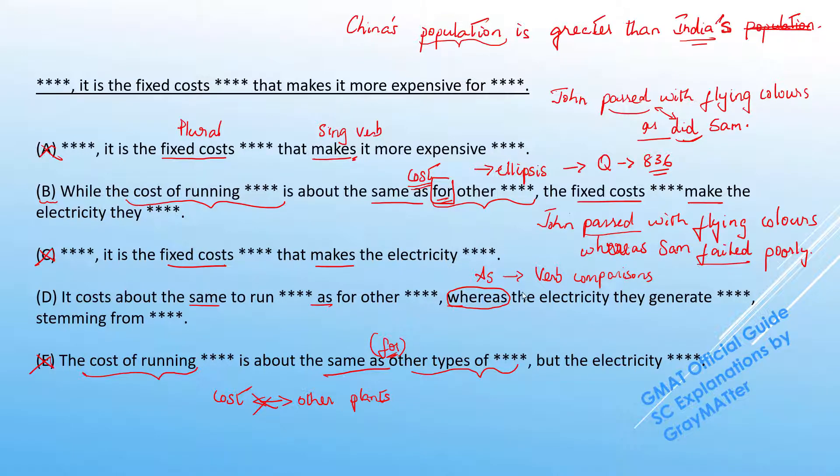But if we notice the two clauses that are actually connected with the whereas here, the first clause is saying, it costs about the same to run this as for other plans, whereas the electricity they generate is stemming from. Now this would not be logical at all. Because as we just saw in this example, you can compare past and failed. Whereas here we are comparing it costs about the same to run these plans, whereas the electricity they generate is made more expensive. So this is not a logical comparison at all. You can't compare that it costs about the same to run these plans with the electricity they generate is made more expensive. That is illogical.